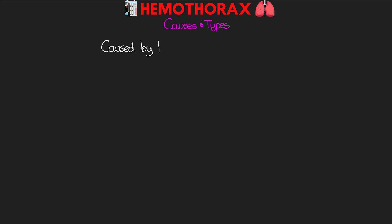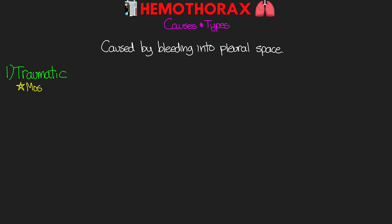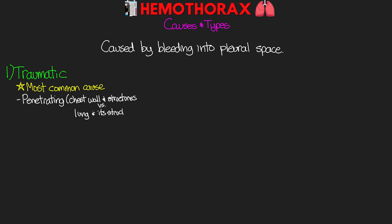A hemothorax is caused simply by bleeding into the pleural space. The first type is our traumatic hemothorax, which is really the most common cause. This can be the result of penetrating trauma where bleeding comes from either injury to the chest wall and its structures or damage to the lung tissue itself. It can also be the result of blunt trauma — our typical culprit here is rib fractures that then damage intercostal vessels or the lung tissue itself. Damage to the aorta may also result and would obviously cause a massive hemothorax.